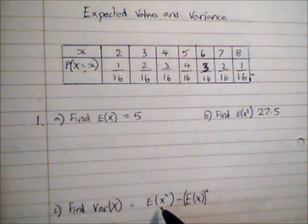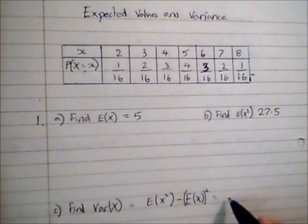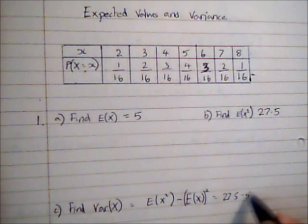So this is the mean of the squares minus the square of the means. So here I've got 27.5 subtract 5 squared, which will give me a variance of 2.5.